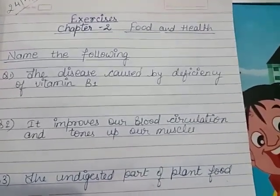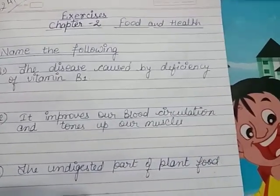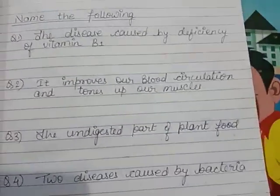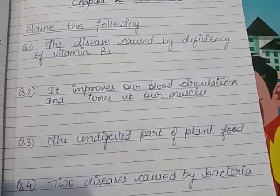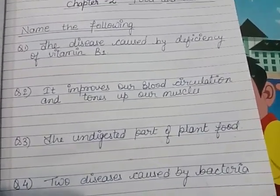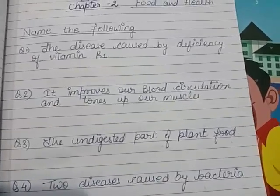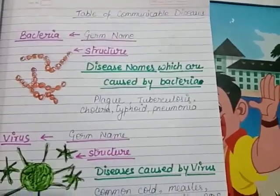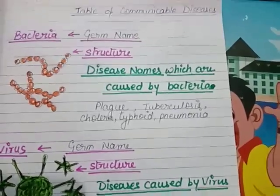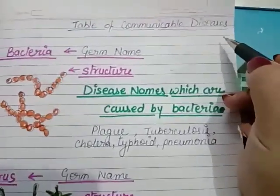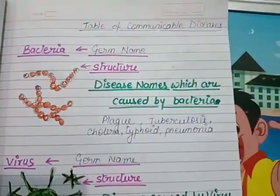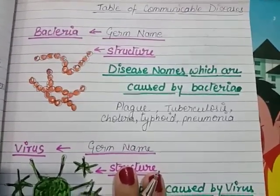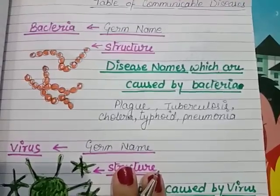Good morning children. As you all know, we have completed Chapter 2, that is Food and Health. Only the exercise portion of this chapter is left. Before the exercise, I want to explain some important topics: the table of communicable diseases and the diagram of the different food groups. Let us begin with the table of communicable diseases. It is already explained, but I want to explain it again so you will easily learn and understand.